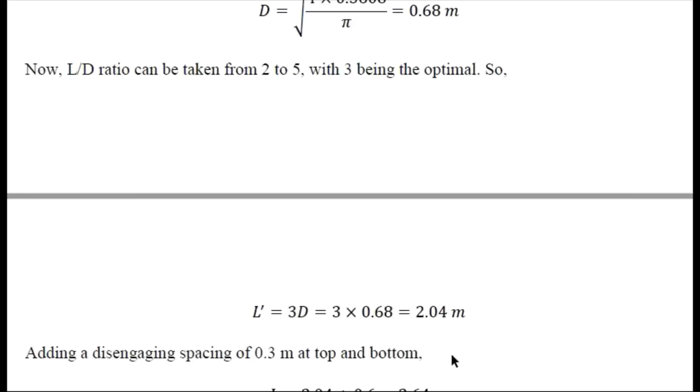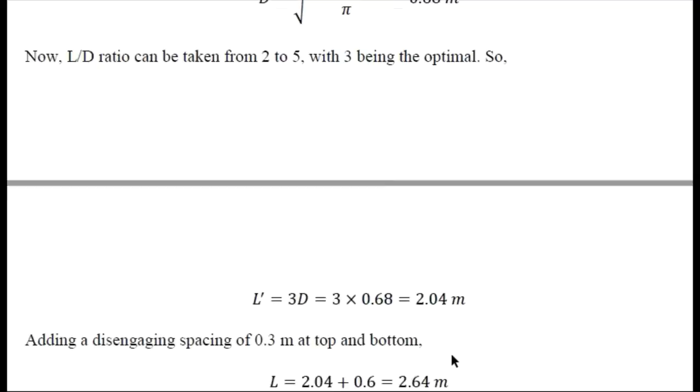Then we can add some space at the top and bottom as disengaging space where any carryover of the moisture can be taken backward. 0.3 meter is usual practice to add at top and bottom, so it becomes total height as 2.64 meter.